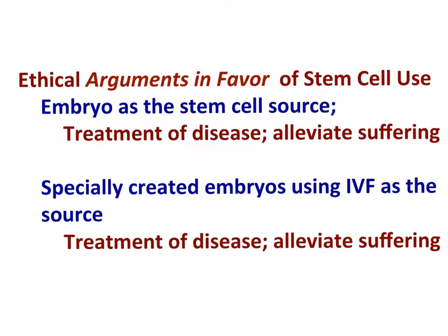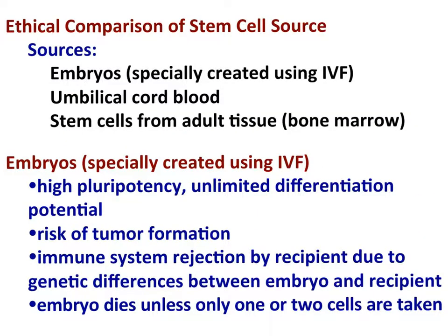In favor of stem cell use — regardless of whether using an embryo or specially created embryos via IVF as the source — the upside is the treatment of disease and alleviation of suffering. Comparing stem cell sources: embryos (even if specially created using IVF), umbilical cord blood, and stem cells from adult tissue such as bone marrow.